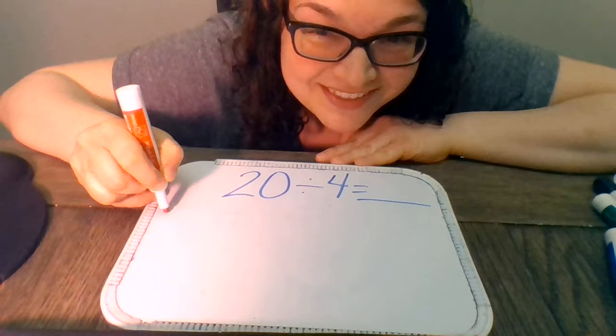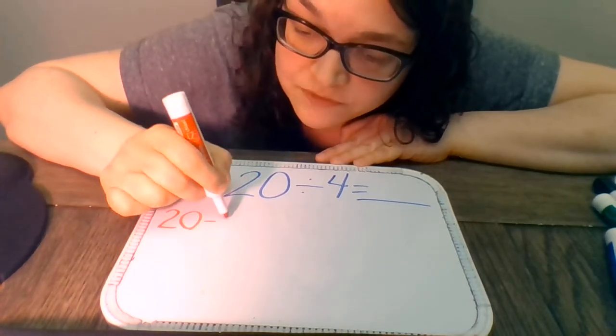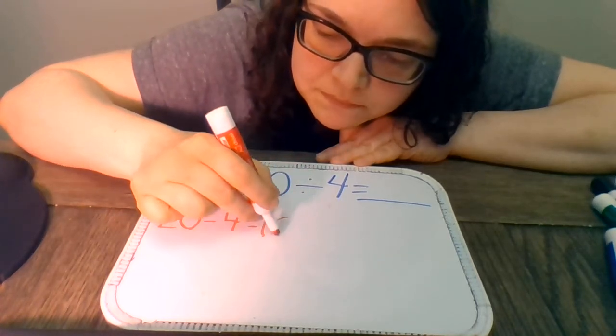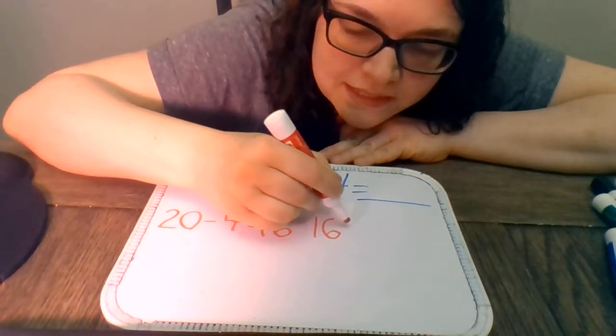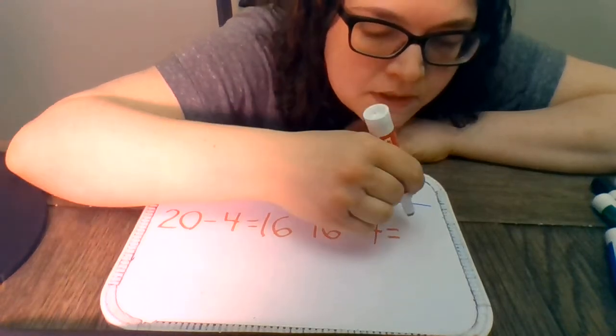All right. I'll make it a little smaller this time. I don't know if you noticed I started running out of room last time. So 20 minus 4 is equal to 16. All right. So then we go 16 minus 4 equals 12.